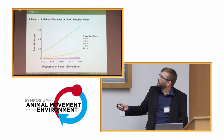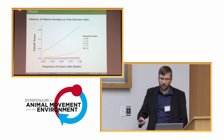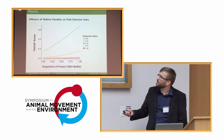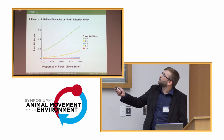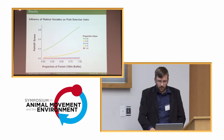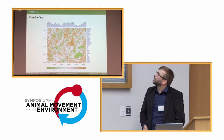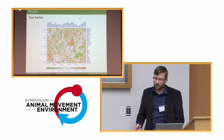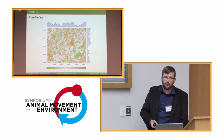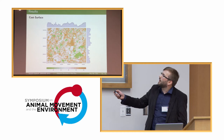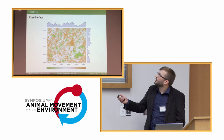Looking at the proportion of forest — keeping all other variables at the observed mean — path selectivity increases with higher proportions of forest within the buffer and decreases with increasing urbanization. The resulting cost surface shows values from zero to 100: roads and other linear structures have very high resistance values, towns also have higher resistance values, forests have low resistance values, and intermediate areas fall in between.